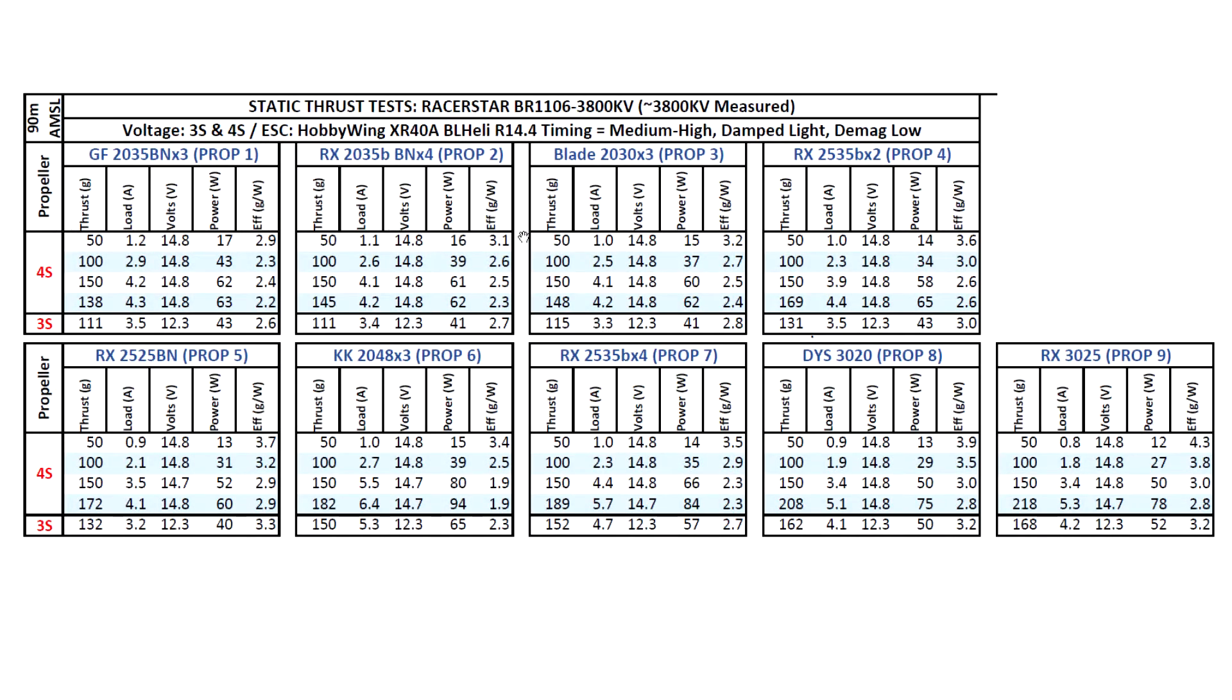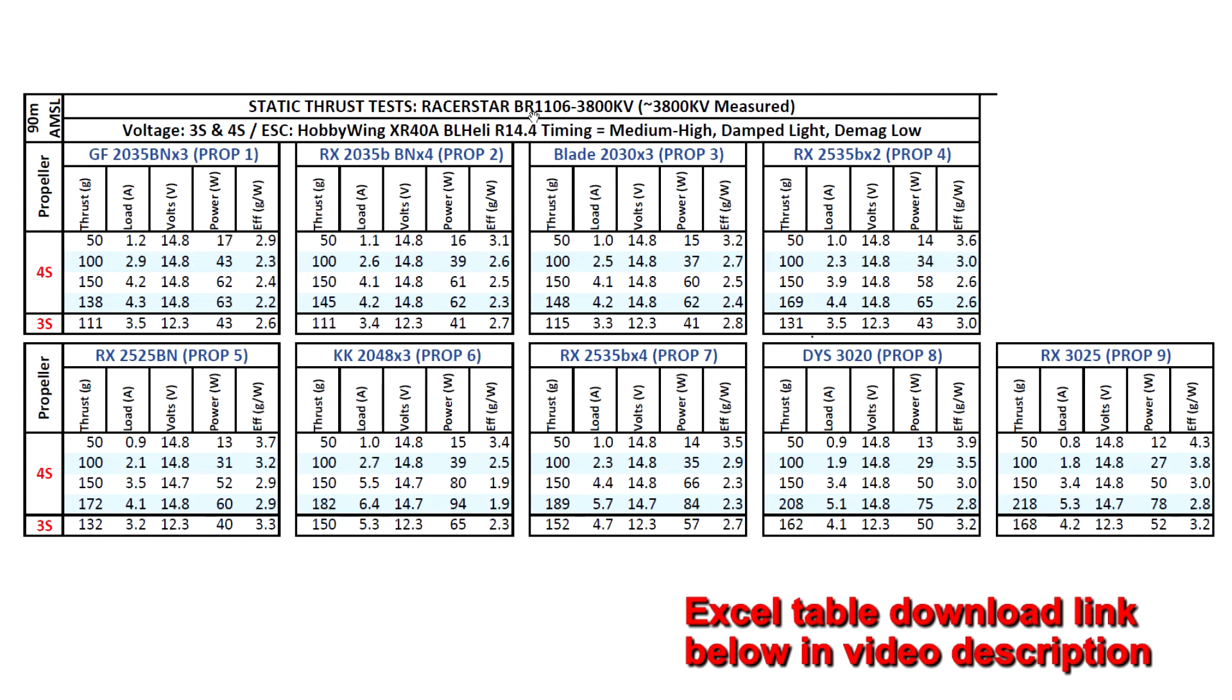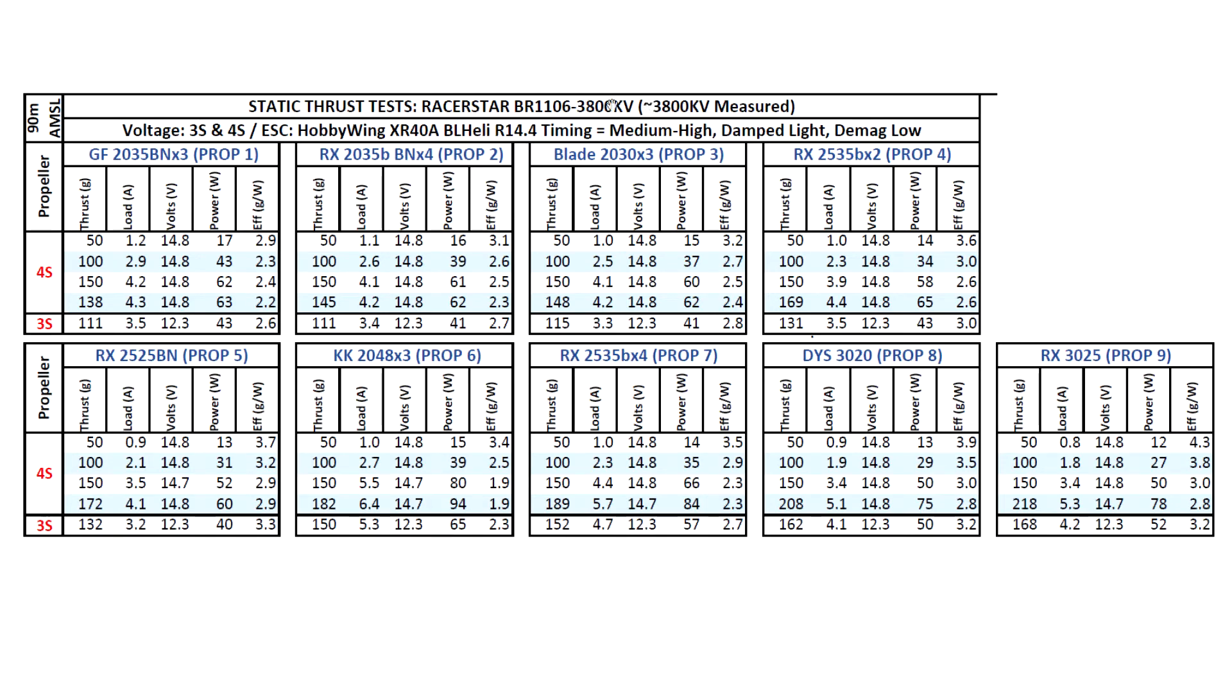All right, so let's look at the results for the Razor Star VR1106 3800 kV. The motor actually measured at very close to exactly 3800 kV, so that's the true kV of the motor. So I tested on 3S and 4S based on that kV. I thought those would be the best matching voltages to test, and the usual props. Quite a lot of props actually, all the way from 2 inch all the way to 3 inch.